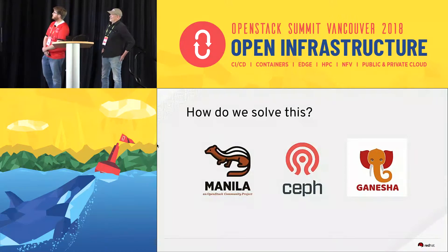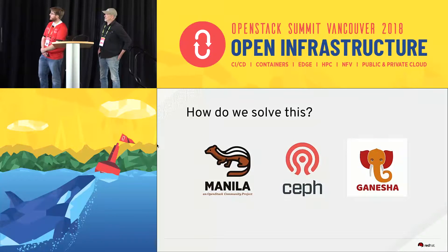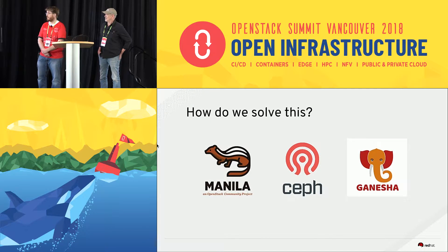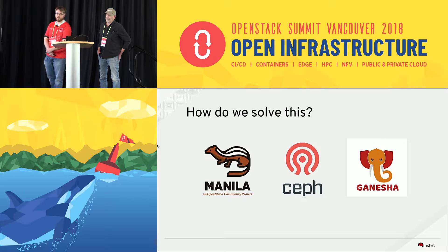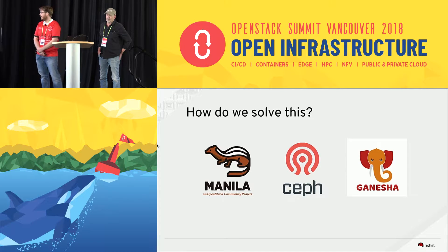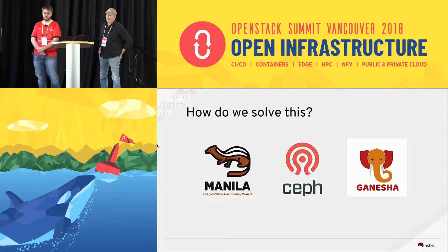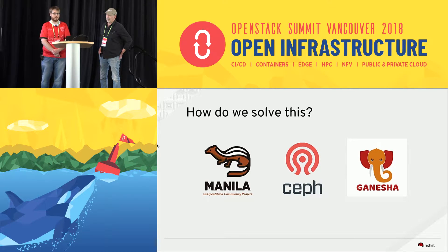What we're going to talk about today is basically three different projects: Manila, which is the file share service for OpenStack; Ceph, which is a common storage solution we use with OpenStack; and Ganesha, which is a user space NFS server that we'll talk about more later.